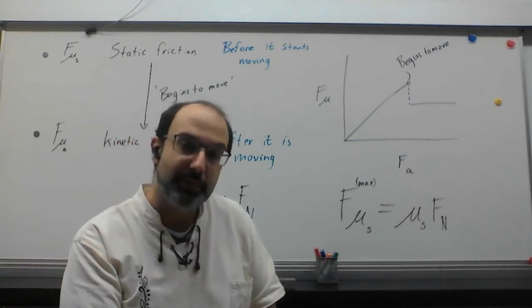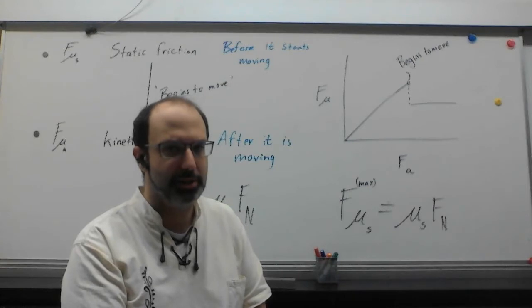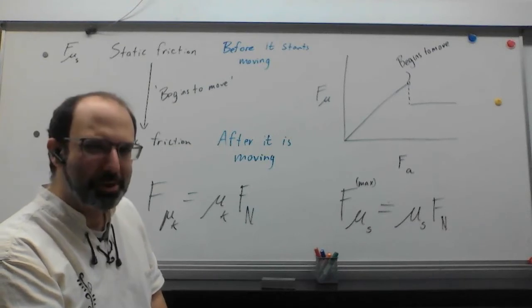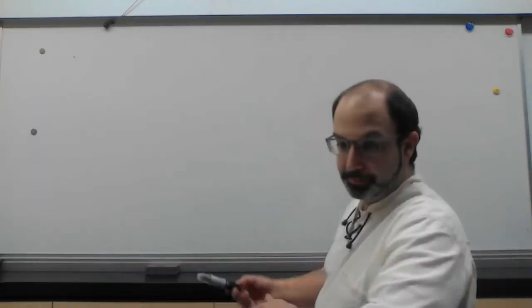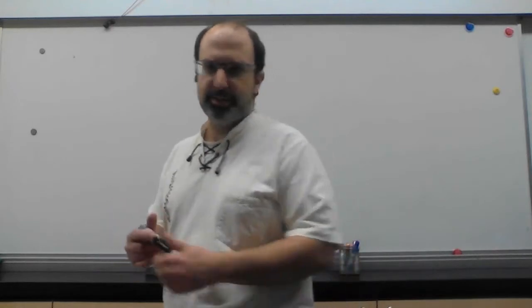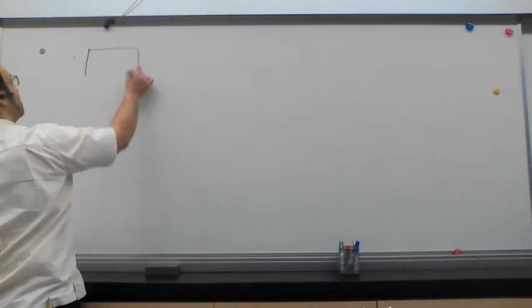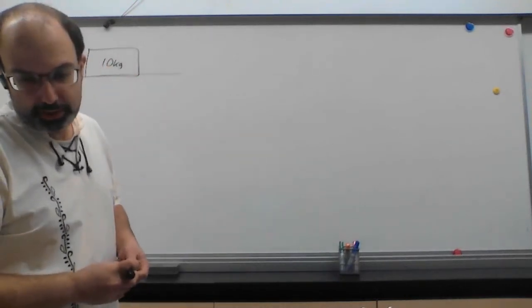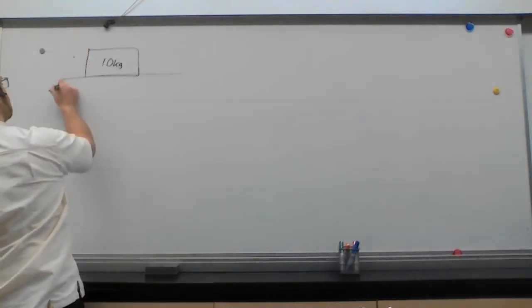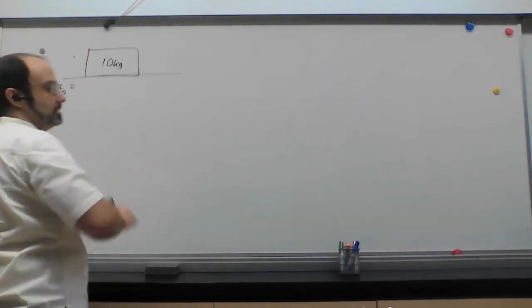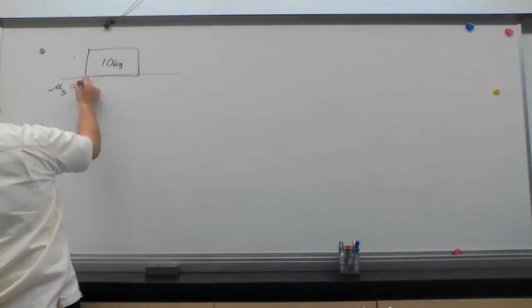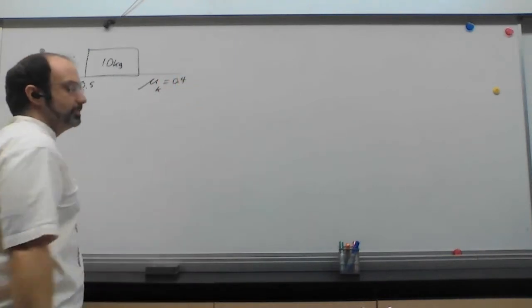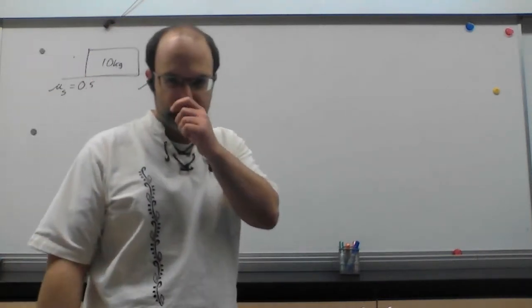So that's sort of the fundamental basics. Now we just need to maybe take a look at how to use all of this. Put an example together and see how that makes sense. So let's get going on that. Let's work through an example. We're going to have ourselves a block and we're going to make it 10 kilograms sitting on a surface. And we're going to say that this surface has a coefficient of static friction of about 0.5, and the coefficient of kinetic friction is about 0.4.